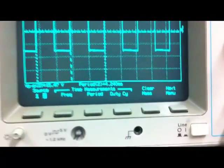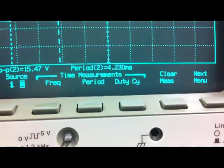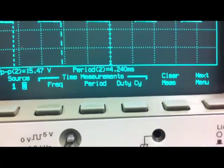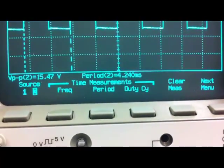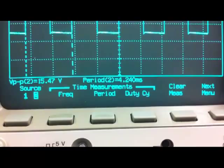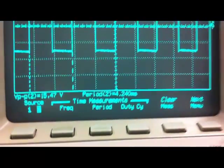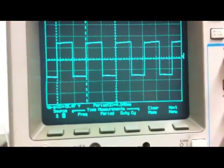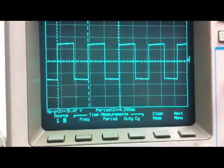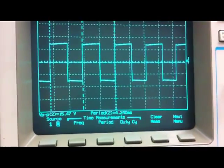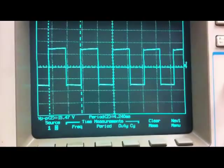So, we can also see that the period we are getting is 4.24 milliseconds, which is slightly less than the calculated value of 4.39 milliseconds. But, that's also expected because we know that the op-amp is not a rail-to-rail op-amp. So, the switching happens a little bit faster than the theoretical value.